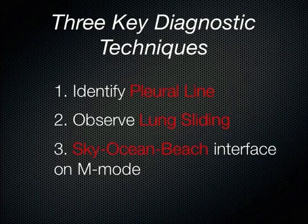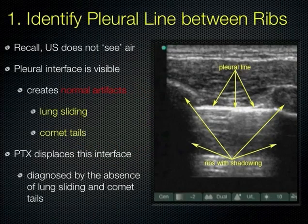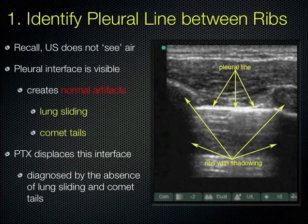Identify your pleural line — you have ribs with hyperechoic cortex and rib shadows. Some call this the 'bat sign': the cortex of one rib and the other forms the wings, and the pleural line is the body. You want to see a rib on either side and the pleural line in the middle. You may see A-lines — that doesn't rule out pneumothorax, because A means air which could be inside or outside the lung. If you see B-lines, the patient does not have a pneumothorax in that area.